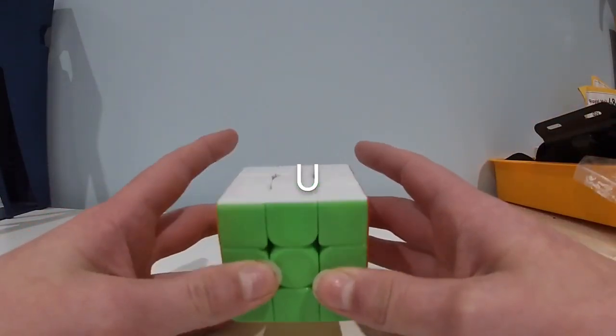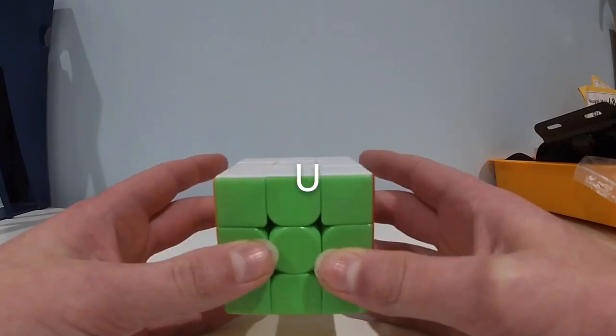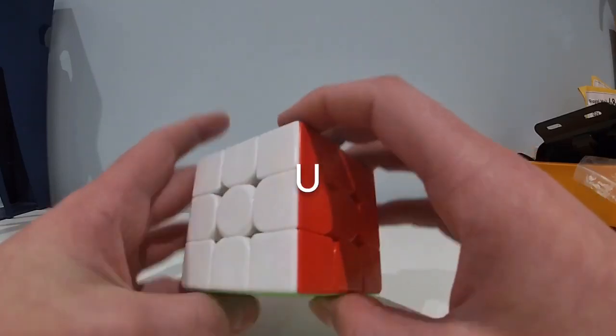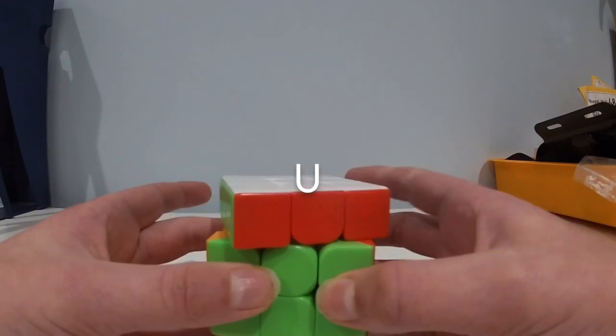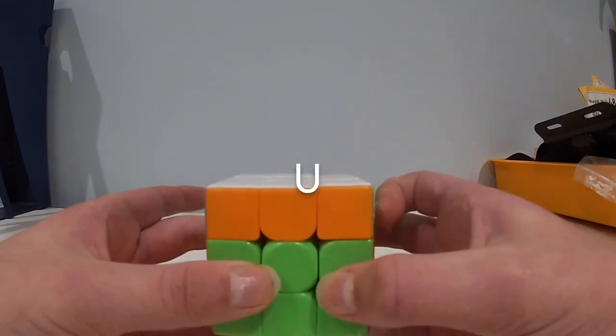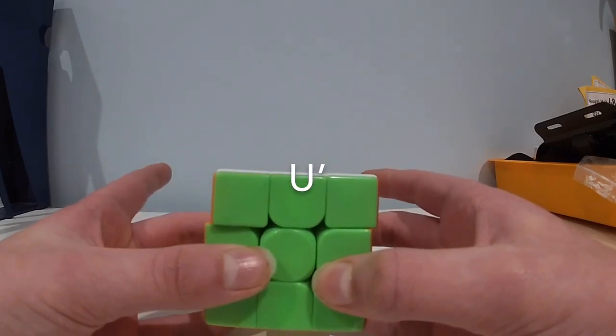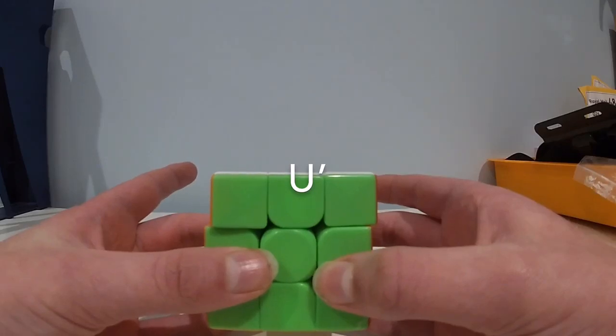So the first thing I'm going to go over is how to do U and U prime. U is very simple, you just flick with your index finger at the back here. U prime is just that but with your left hand, with your left index finger just flick the other way.